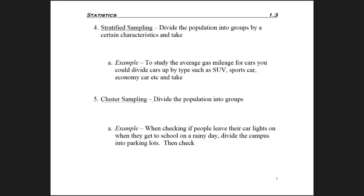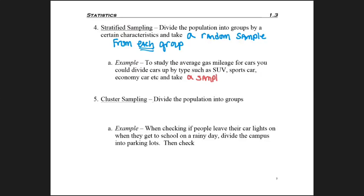A fourth type of sampling method is called stratified sampling, and this is where you divide the population into groups by some certain characteristic, and then you take a random sample from each group. For example, let's say that you want to study the average gas mileage for cars, so it might be easier to divide cars up by type, such as SUV, sports car, and economy car, and then you would take a sample from each car type.